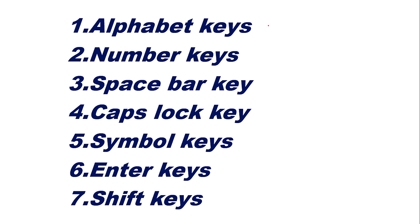Alphabet keys are used to print alphabets — A, B, all the way through Z. Number keys are 0, 1, 2, through 9. With the combination of these numbers, we can make any number, as you already know.